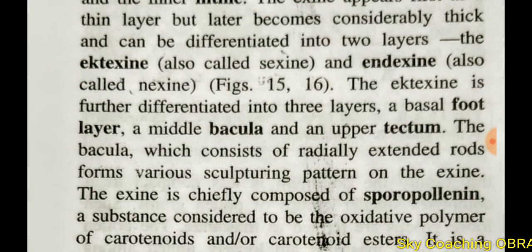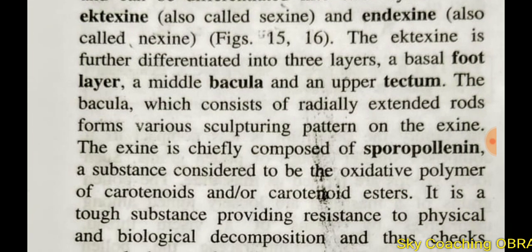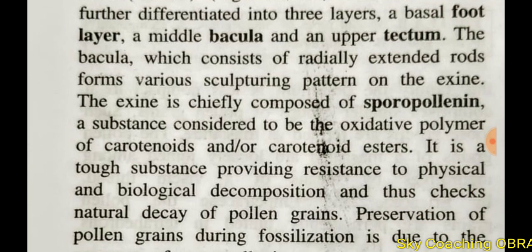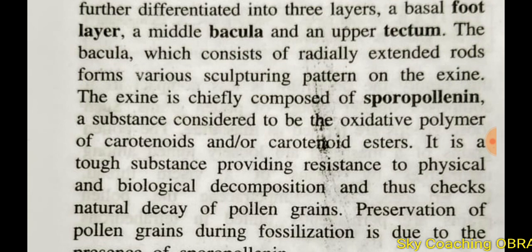The exine is safely composed of sporopollenin, a substance considered to be the oxidative polymer of carotenoids and carotenoid esters. The chemical nature of sporopollenin is made by carotenoids. It is a tough substance providing resistance to physical and biological decomposition, and thus checks the natural decay of pollen.